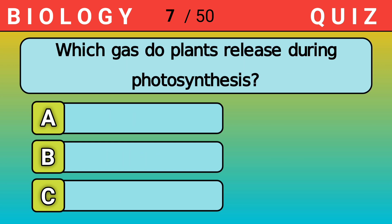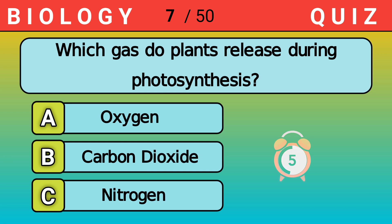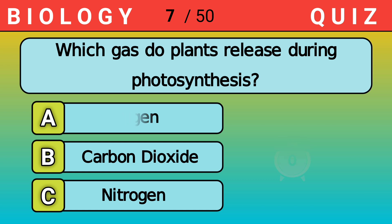Which gas do plants release during photosynthesis? Answer A. Oxygen.